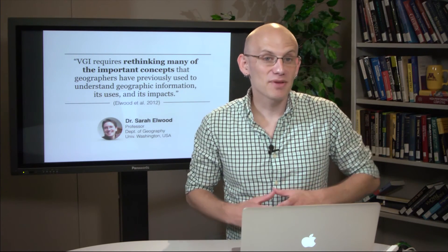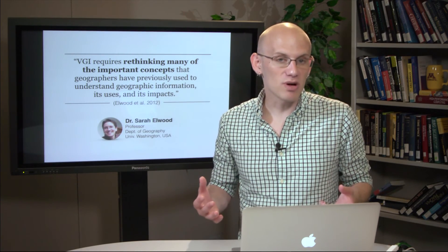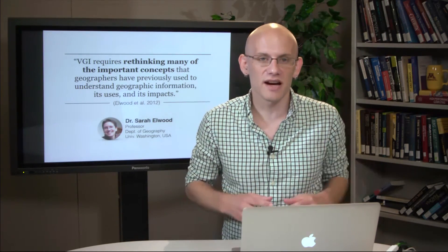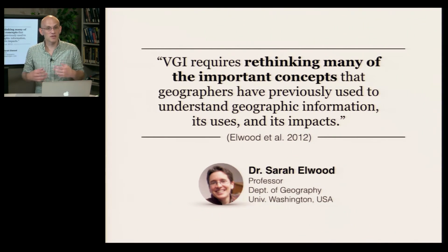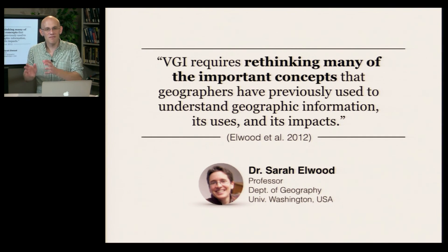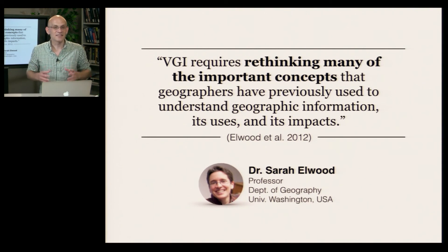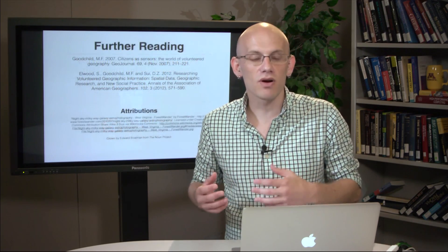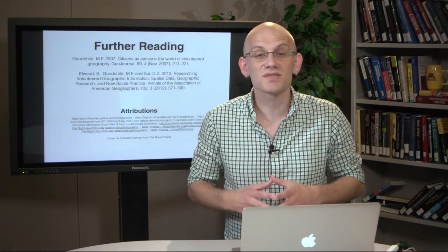As you might guess from the different population producing geographic information — people without formal qualifications — and the different means by which this information is produced — outside of official agencies — VGI as a whole displays very different properties than traditional geographic information. Understanding these differences and learning how to adapt to them are integral to successfully using VGI in spatial computing systems. In the words of Elwood and colleagues, VGI requires rethinking many of the important concepts that geographers have previously used to understand geographic information, its uses, and its impacts. The goal of the next few modules will be to introduce what is known about how VGI is produced, the resulting properties of VGI, and how to control for or take advantage of these properties in VGI-based spatial computing technologies.